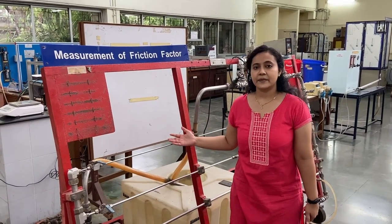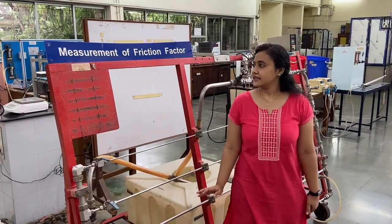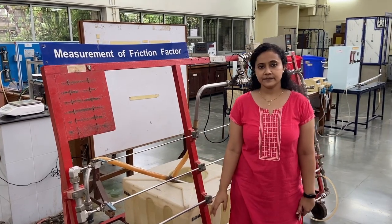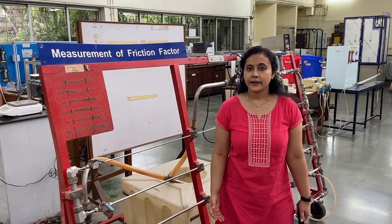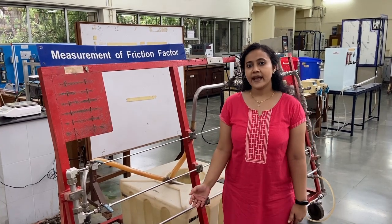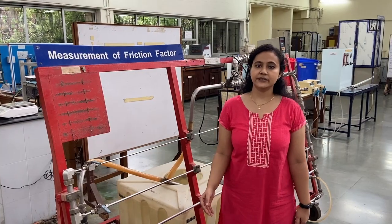The objective of this experiment is to establish the relationship between pressure drop and flow rates in different flow regimes. We will be doing that by understanding how the friction factor, Reynolds number, and surface roughness are related to each other.